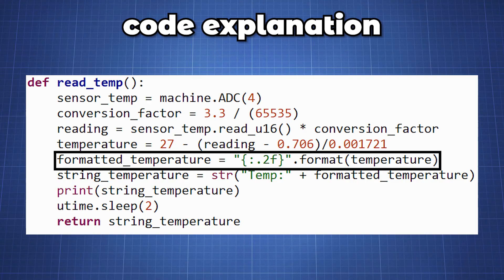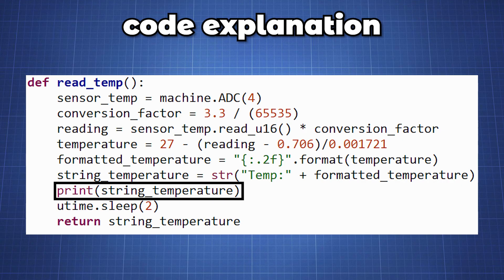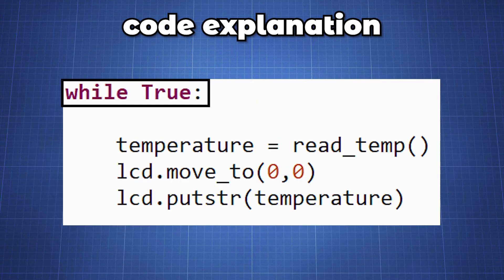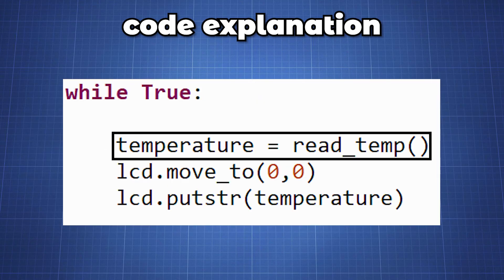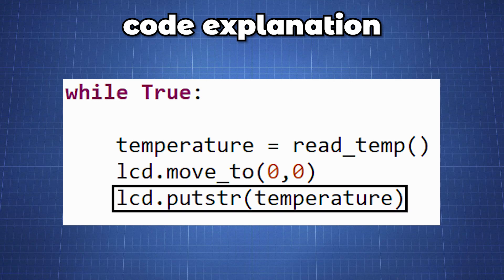We format the string only to display two decimal values and add it to a custom string to display the temperature. Then we print out the temperature to the console, wait for two seconds before taking another reading and return the string. We then create an endless loop where we read the temperature, move our LCD cursor to the first row and column character and display our temperature.